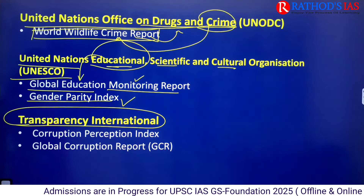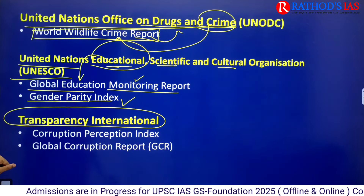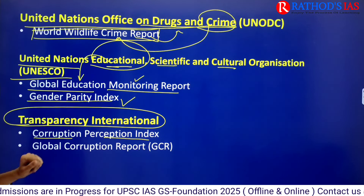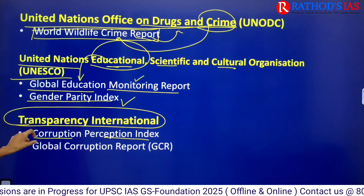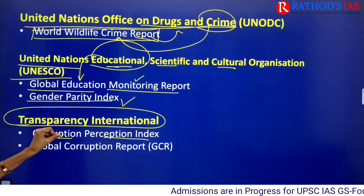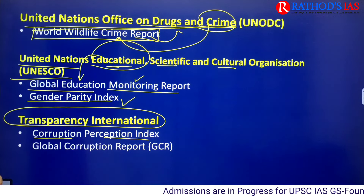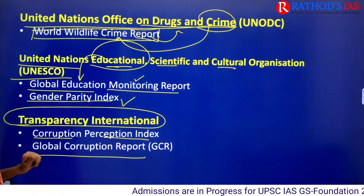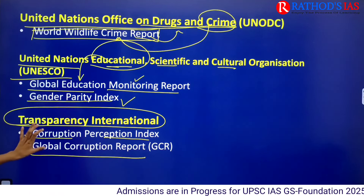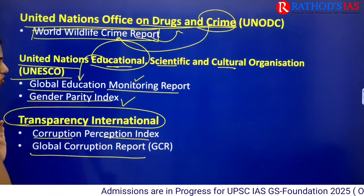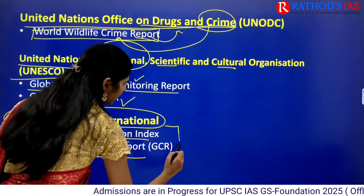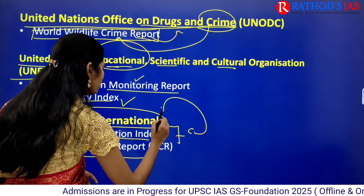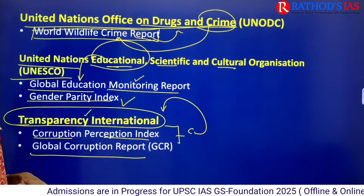Next is Transparency International, which releases two corruption-related reports: the Corruption Perception Index and the Global Corruption Report. Both are related to corruption and are released by Transparency International — very important to remember.